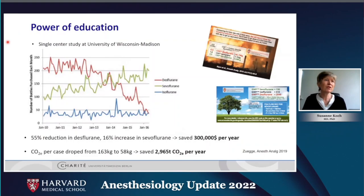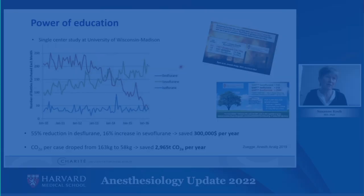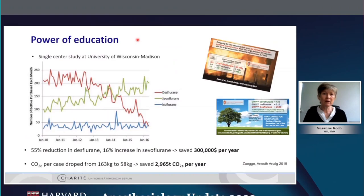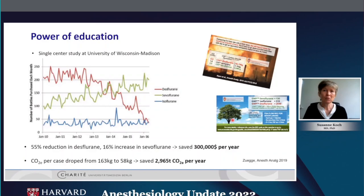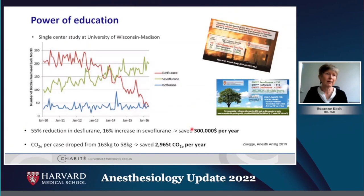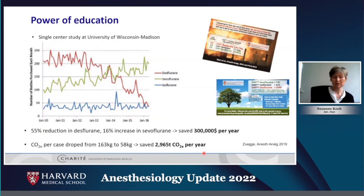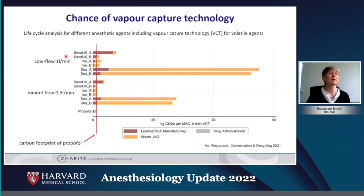What about solutions? A study from the University of Wisconsin-Madison implemented education and training, putting stickers on ventilators to make people aware that sevoflurane is the better choice compared to desflurane. They found that desflurane use was reduced by 55% during the study, sevoflurane increased slightly, and this saved $300,000 per year and 2,965 tons of CO2 emissions per year.